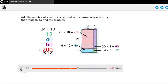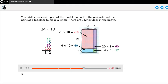Add the number of squares in each part of the array. Why add rather than multiply to find the product? You add because each part of the model is a part of the product, and the parts add together to make a whole. There are 312 toy dogs in the booth.